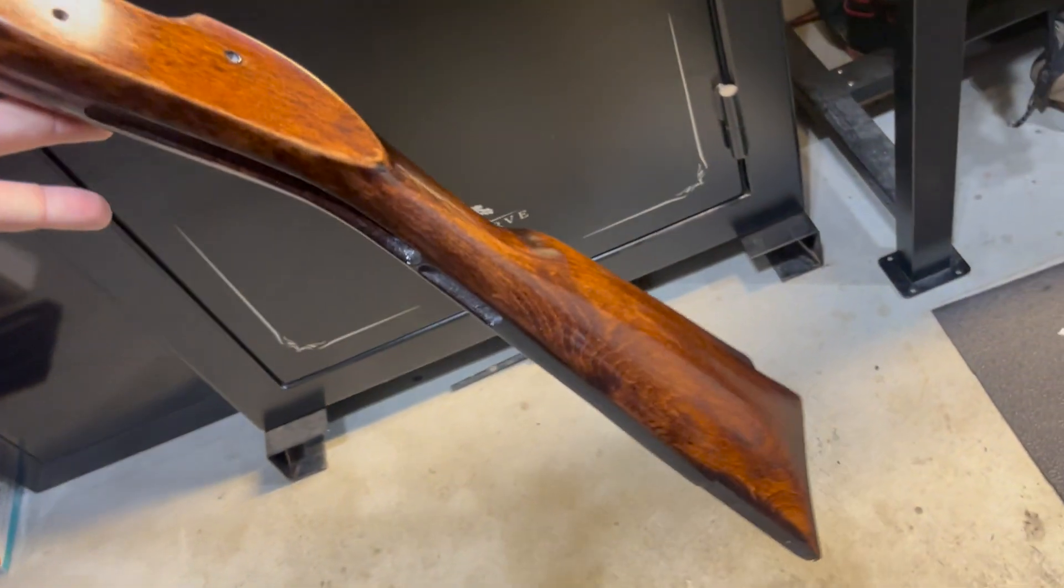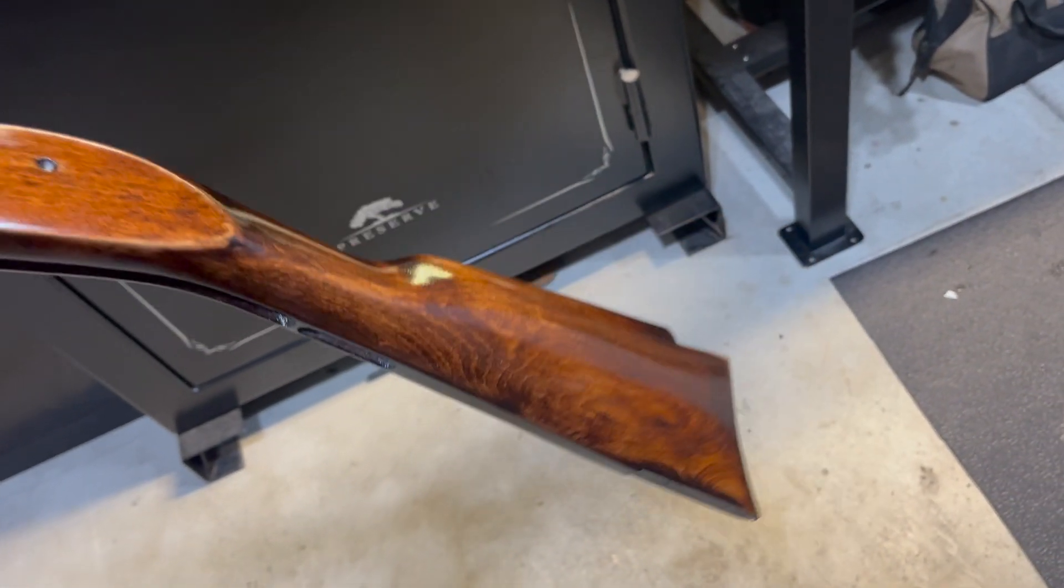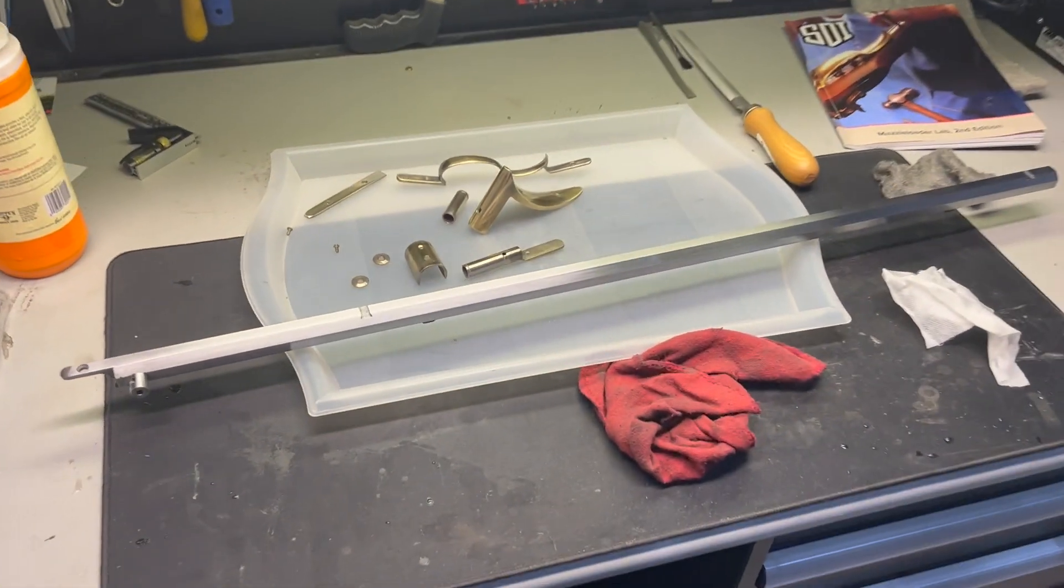I think with this barrel browned and then the stock, I just keep putting a coat of tru-oil every couple days. That stuff is set up pretty hard and then I'll hit it with steel wool, take the shine off.